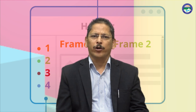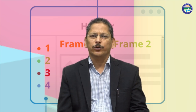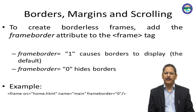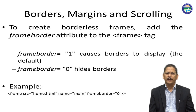Now we can mention the frame border attribute. If we set frame border to 1, the border will be visible. If we set it to 0, it will hide the border. This is common in modern websites — each frame is displayed but borders are not shown on the page. For example: frame src home.html, name is main, and frame border is 0 — there will be no visible border. To create a borderless frame, add the frame border attribute set to 0 to the frame tag.